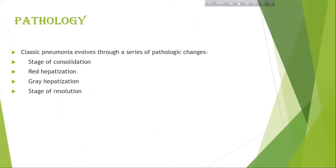Pathological changes: Classic pneumonia evolves through a series of pathological changes — stage of consolidation, then red hepatization, then grey hepatization, and finally stage of resolution.